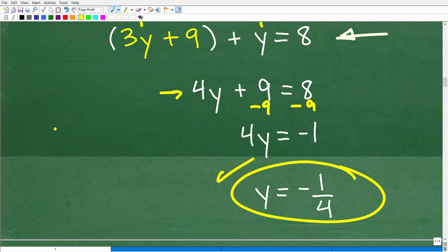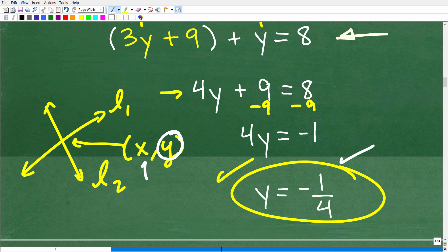OK, so we have y. Remember, we're looking for that coordinate, the solution. And we have one line and another line. We're looking for that specific x, y point right here. And what we just did, OK, is find out that y coordinate. Now we need the x coordinate.